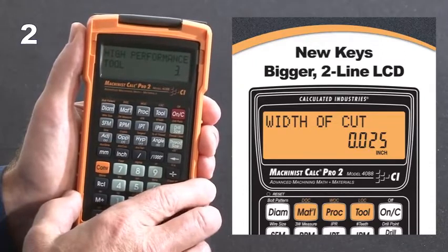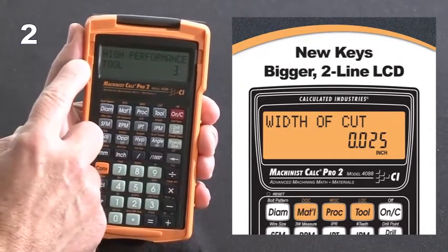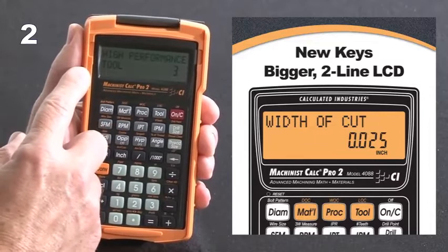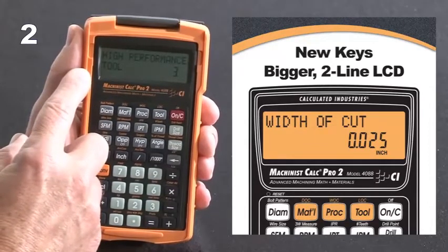Plus, we show it all off on a larger two-line LCD with more complete spell-outs for clearer, more understandable inputs and results.